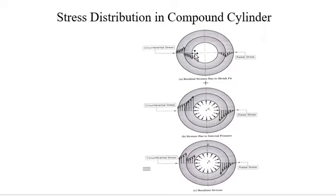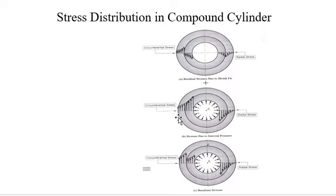In the case of circumferential stress, it has a comparatively higher value at the inner surface of the inner cylinder, and is maximum at the outer surface of the inner cylinder. For stresses due to internal pressure pi, the radial stress is zero and maximum at the inner surface of the inner cylinder. The circumferential stress is maximum at the inner surface of the inner cylinder and comparatively less at the outer surface of the outer cylinder. Combining residual stresses and stresses due to internal pressure gives the resultant stress distribution.